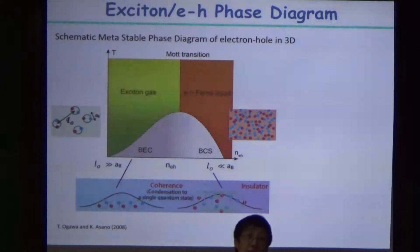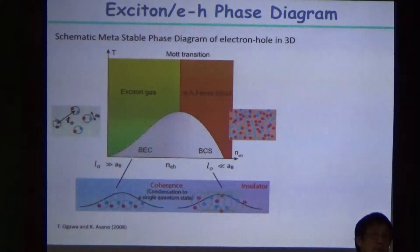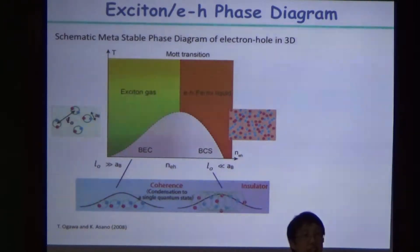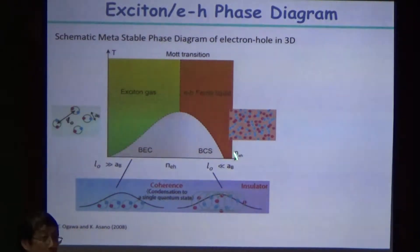However, if you increase exciton density too much, interesting things happen. Even without any condensation, if the exciton-exciton distance is too close compared with the electron-hole separation, eventually electrons and holes start to screen each other. Excitons start to unbind such that the exciton gas will turn into separate electron-hole gases or bubbles.